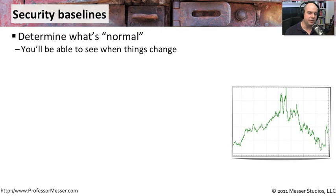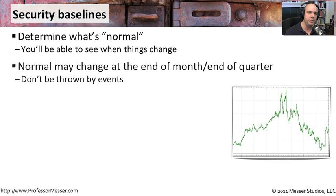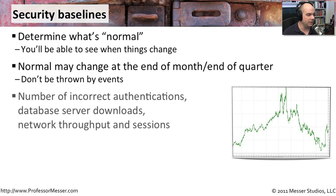To really take advantage of that log information, you have to know what's normal. You have to create a baseline of what normally happens in your environment. If 100 people suddenly authenticate to the network, is that normal or not? You should always be looking for those types of things. Keep in mind that things do change at different times of the month and year — you may have processes that occur in the accounting department at end of month, or quarterly reports based on your business. So don't be thrown when those things happen; sometimes those spikes in activity are completely normal.